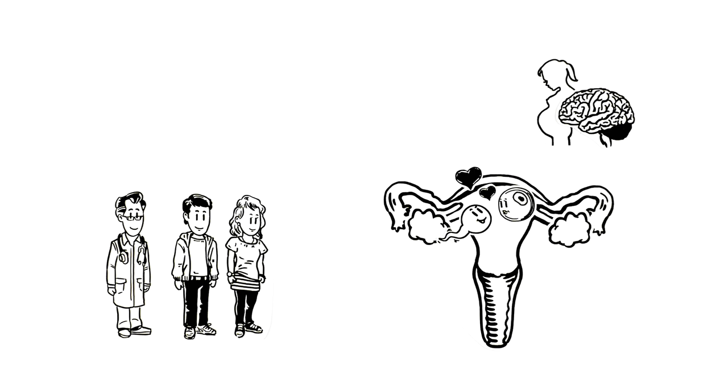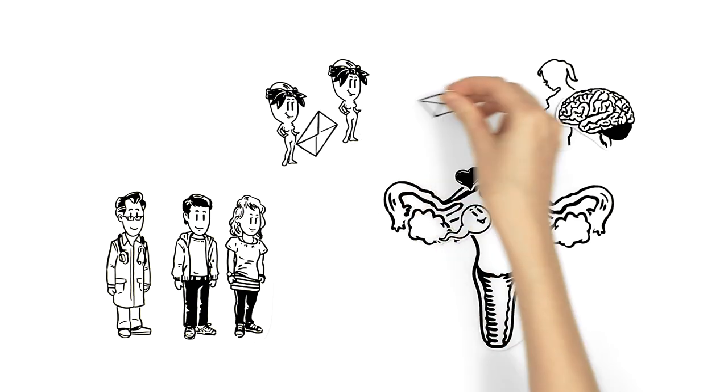If the egg cell is fertilized, the concentration of the feminine sex hormone estrogen increases in the blood. Among other things, this messenger has the task of informing the body of the pregnancy.